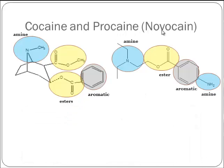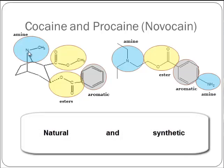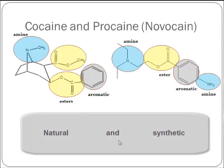Its name actually speaks to its parentage — procaine came from cocaine, not naturally but made in the laboratory to model this particular grouping of cocaine, which is called its pharmacophore.